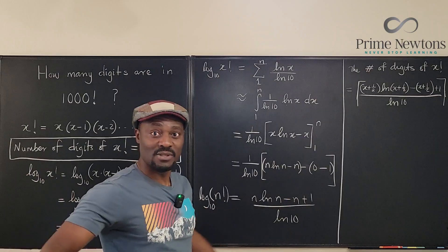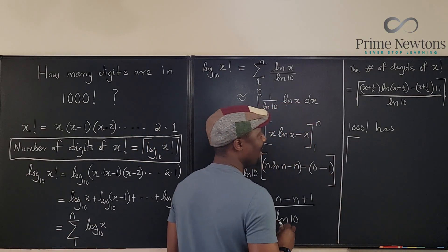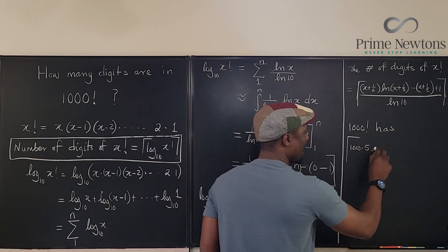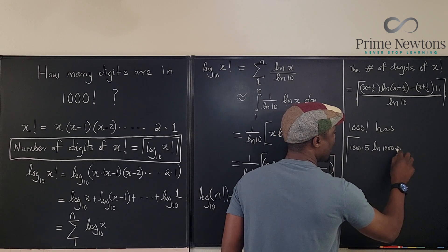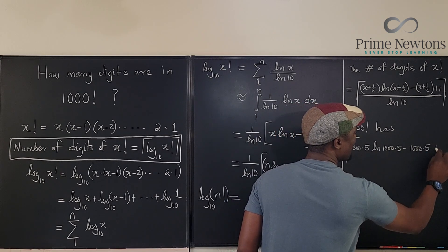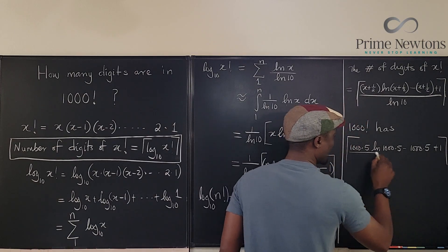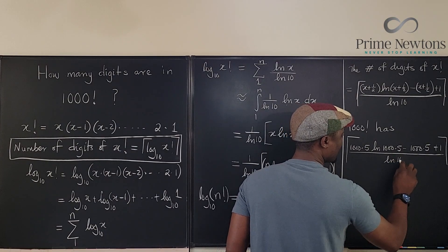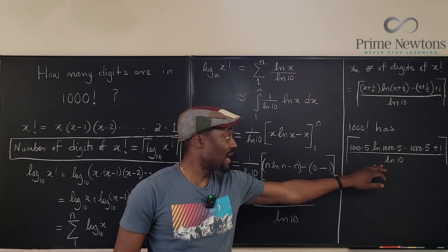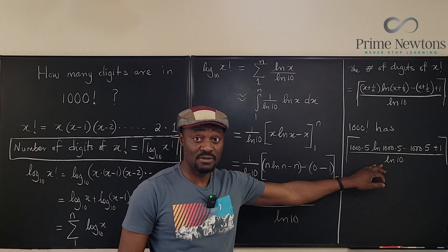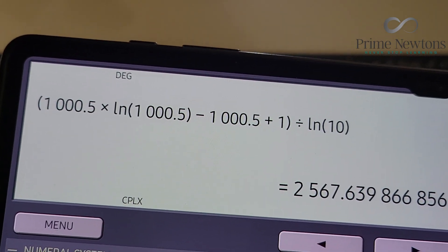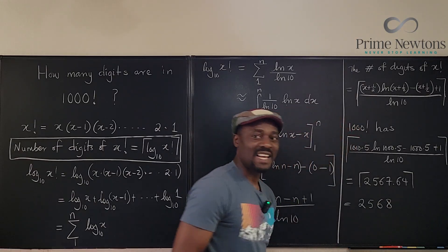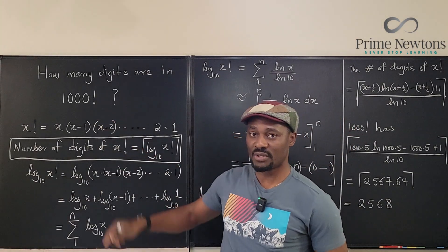Let's try 1000. It's going to be 1000 plus 1 half will be 1000.5 ln of 1000.5 minus 1000.5 plus 1 divided by natural log of 10. This I can plug into my calculator and get the answer. Let me do that. That's what we got. 2567.64. 2568. That is the number of digits in 1000 factorial.